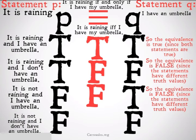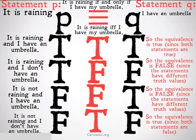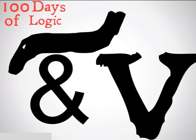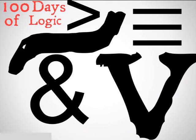And finally, it is not raining and I don't have my umbrella. That's going to be true, because both statements have the same truth value — they're both false. So that was equivalence. Next, we're going to be taking a look at compound statements and how we put these operations together.